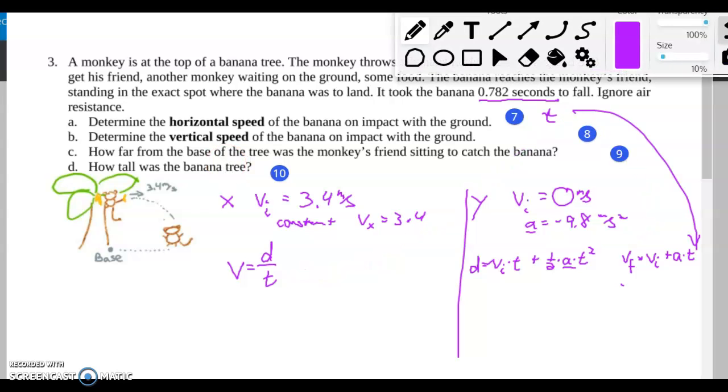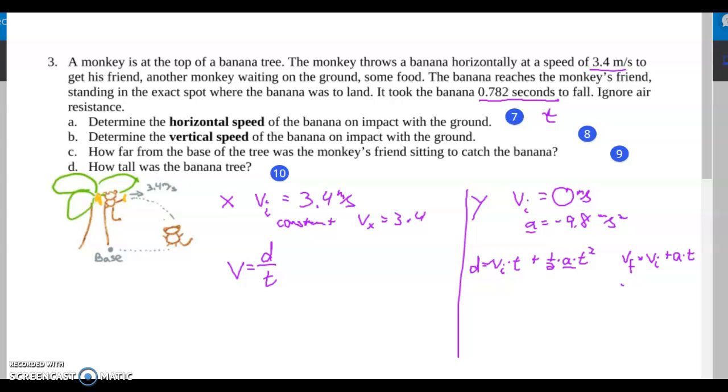You'll use all three of these equations to answer these other three parts. The other thing you gotta keep in mind is what exactly they're asking you for. They ask them in different ways. Like when they say how far from the base of the tree was the monkey's friend sitting to catch the banana, when they ask you this question they're asking for something in particular that you've done before. It is a distance, a horizontal distance they're asking you for, and another word for horizontal distance is range. So it's just like how you solved out for range before, but you have the time, you can use this equation to solve for that distance.